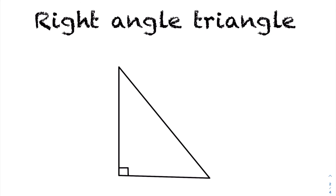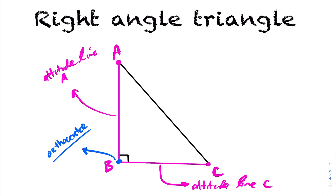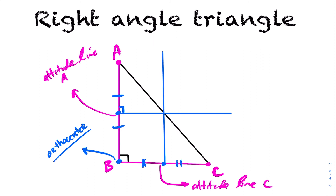Let's take a look at right-angle triangles and how that would affect your Euler line. With our right-angle triangle ABC, altitude line A goes from vertex A to the opposite side at 90 degrees. Likewise, altitude line C goes from vertex C to the opposite side at 90 degrees. Therefore, that intersection point is the orthocenter. To calculate the circumcenter, we find the intersection of the perpendicular bisectors. The perpendicular bisector of AB goes from the midpoint of AB across, and the perpendicular bisector of BC goes from the midpoint of BC upward. That point of intersection lies on the hypotenuse.